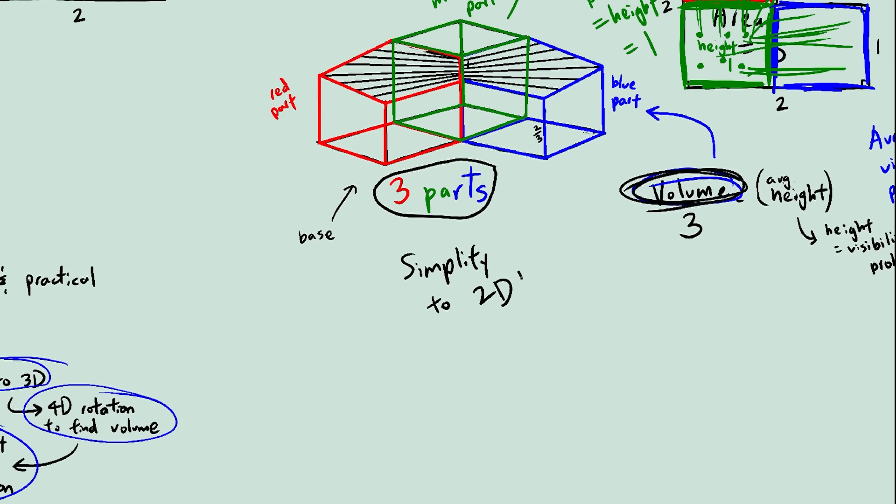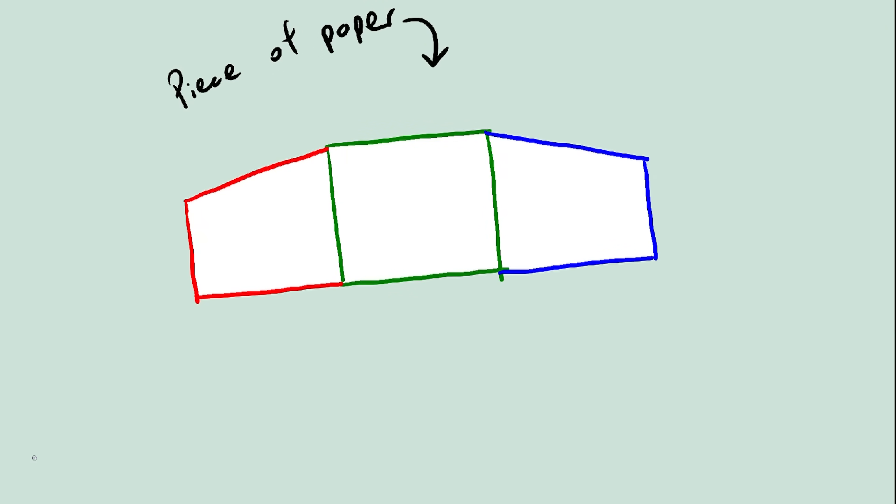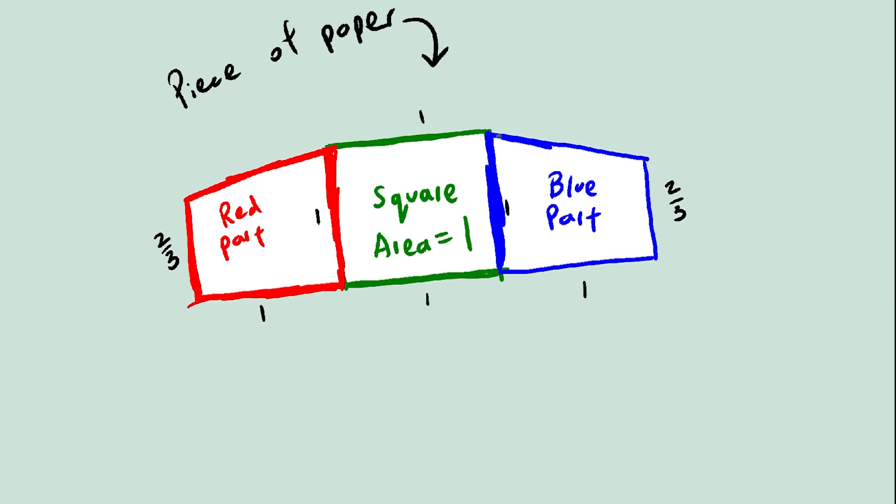So now let me show you a 2D analogy. Suppose we want to find the area of this piece of paper right here. If you haven't noticed, this is kind of like the 2D version of this. There are three parts, the middle part is a square, and for the sake of the analogy, we'll say we have no idea how to find the area of these two parts. The area of the square is easy, it's just one. But what do we do with these two parts?